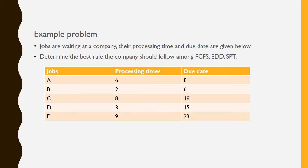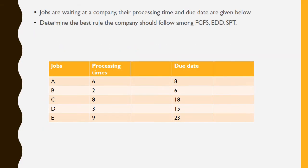The question asks us to determine the best rule the company should follow among First Come First Serve, Earliest Due Date, and Shortest Processing Time. We will add two columns to the table: Flow Time and Late Days. Flow time is simply the cumulative sum of the processing times.